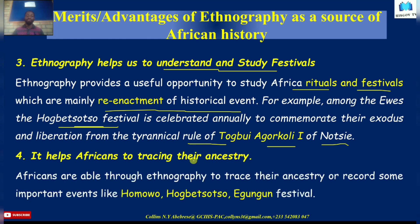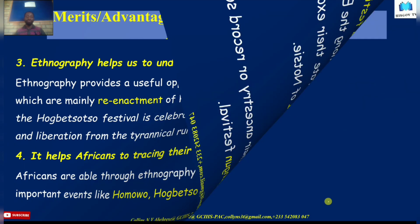Ethnography also helps Africans in tracing their ancestry. When you use ethnography as a source for the reconstruction of African history, it helps the Africans to trace their ancestries and record some important events like the Hobotchocho and the Gangan festival. When you study the present social institutions of a group of people, you are able to trace the ancestry of the people — that is, you are able to trace where the people come from or migrated from. That is what we mean by ethnography helping to trace the ancestry of the people.